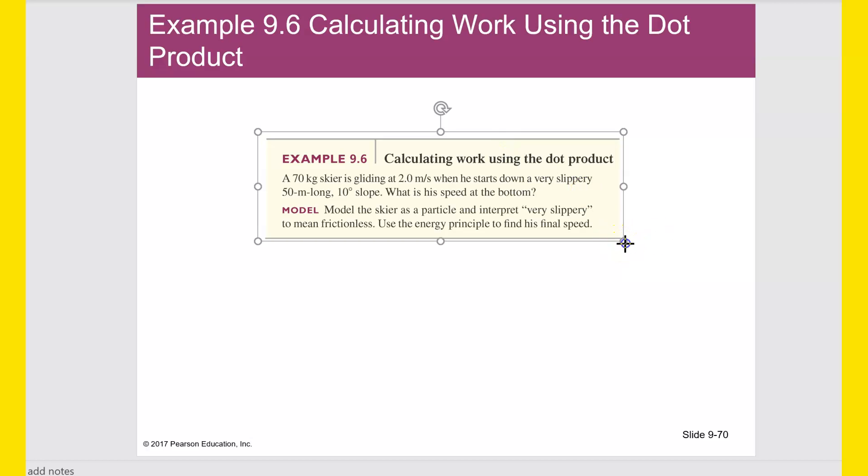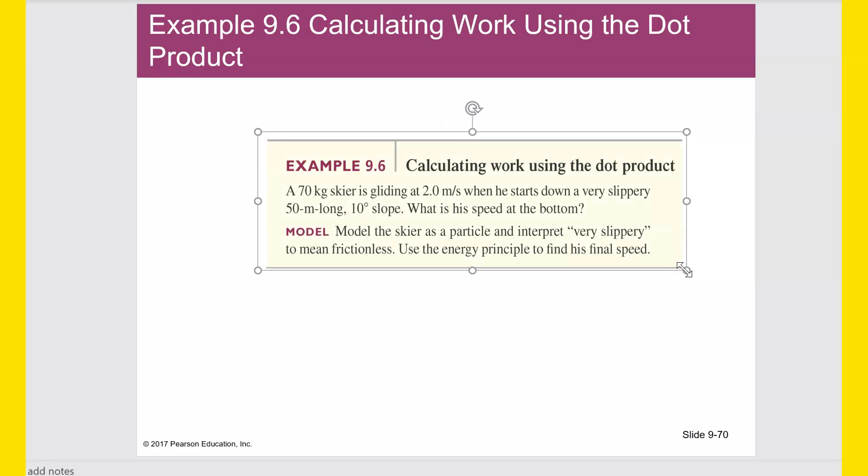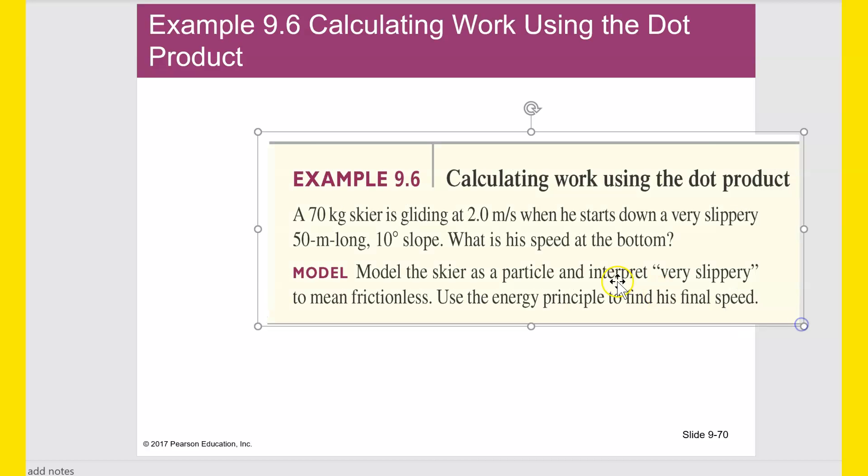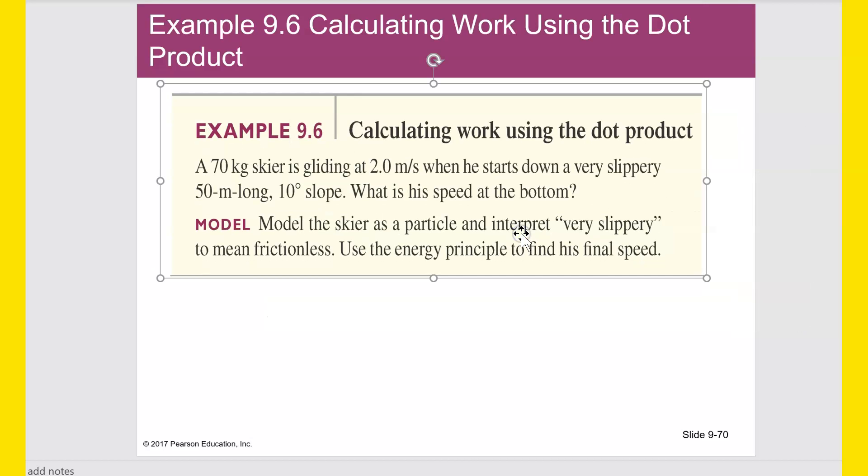All right, work done by a constant force. A force F acts with a constant strength and in a constant direction as a particle moves along a straight line through a displacement delta R. The work done by this force is the same thing we've said earlier. Work equals the force vector dot the displacement vector, or the displacement vector is called delta R here.